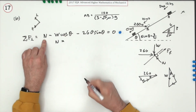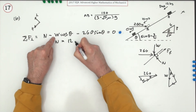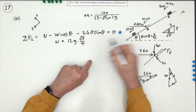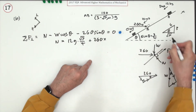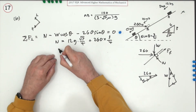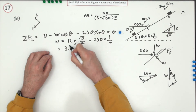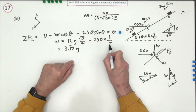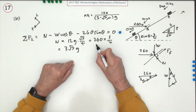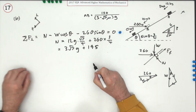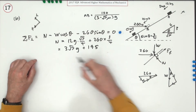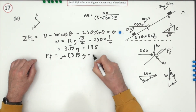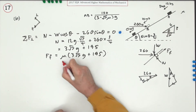So N = 12g × (√7/4) + 260 × (3/4) = 3√7 g + 195. The friction force is then μN = μ(3√7 g + 195). That's a critical intermediate result, even though it's not explicitly marked separately.